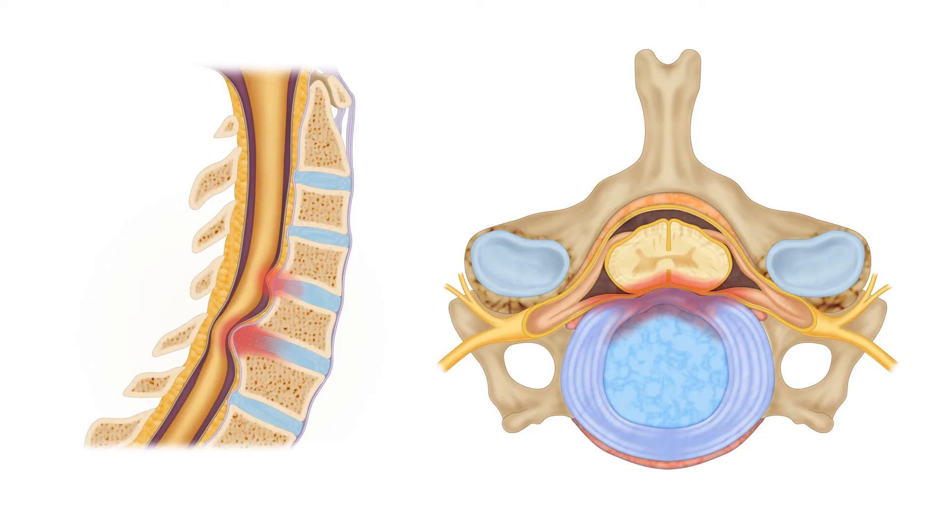The spinal cord passes through the spinal canal. Cervical myelopathy occurs when the spinal cord is compressed within the spinal canal and begins to malfunction.